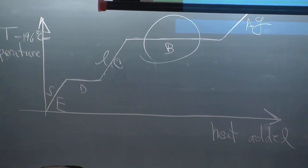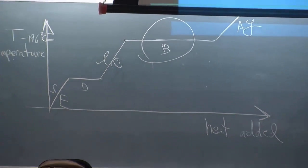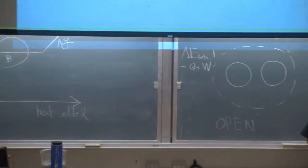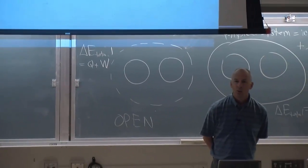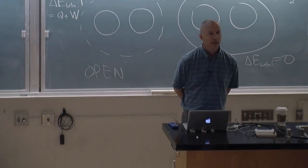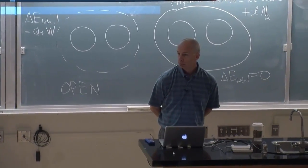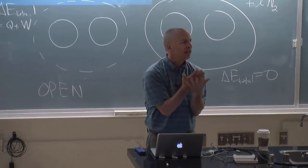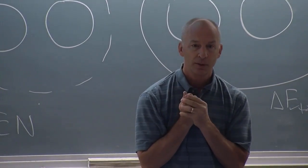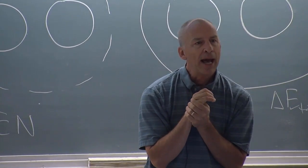If the ice cube was hotter than that, so it was somewhere between zero and minus 196. If it was hotter than that, what would happen between those two? If the ice cube is hotter than 196, what's going to happen?